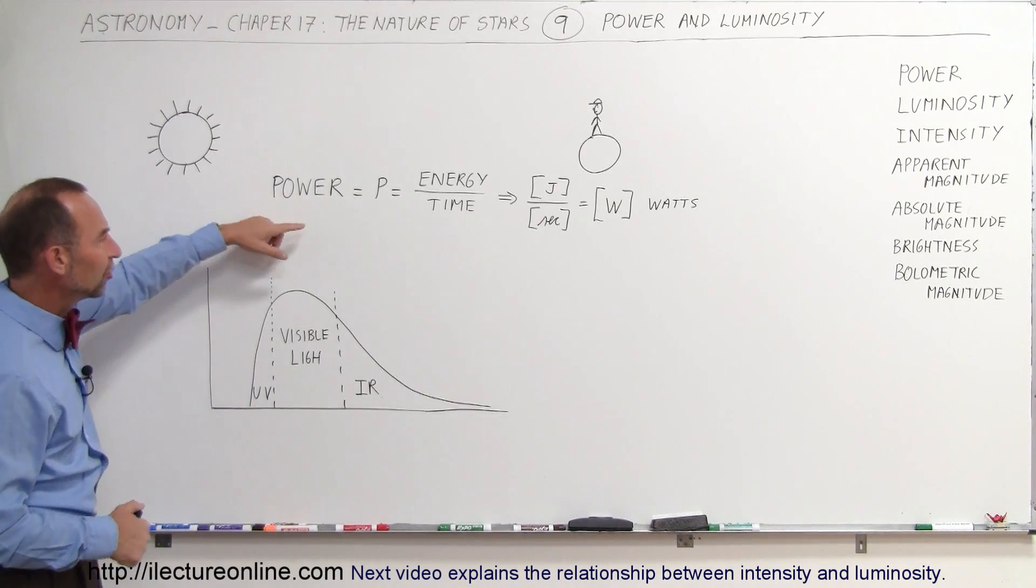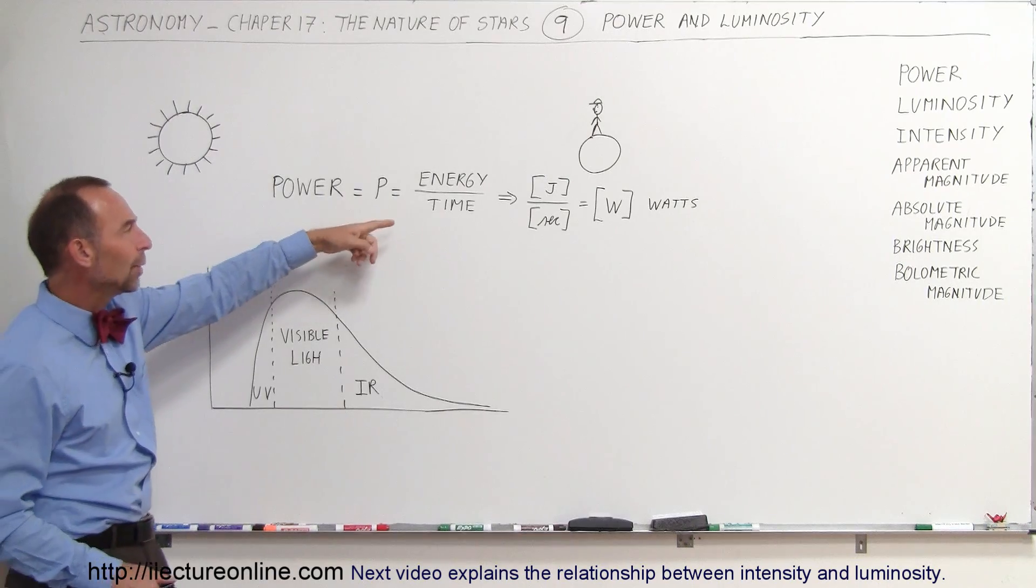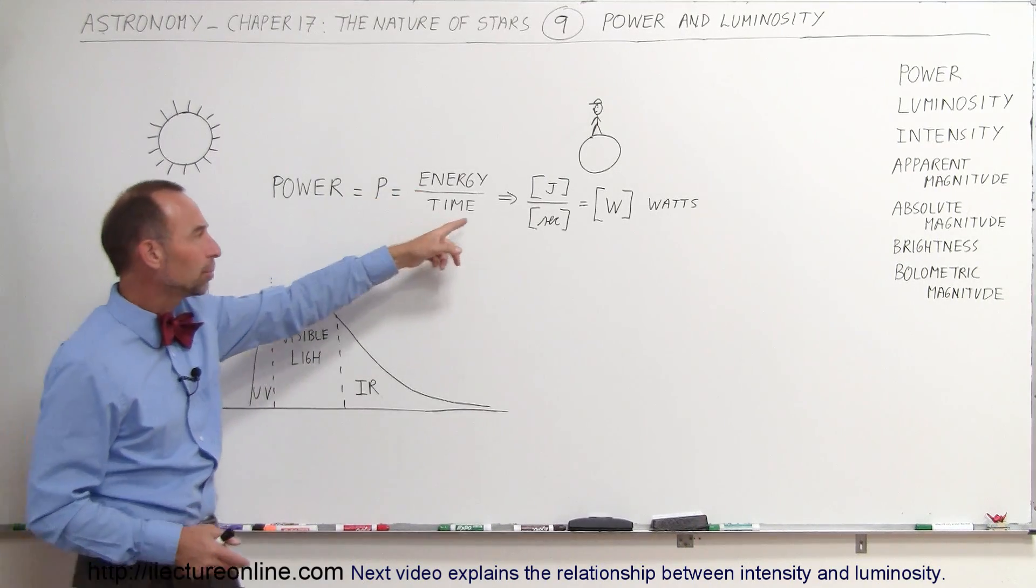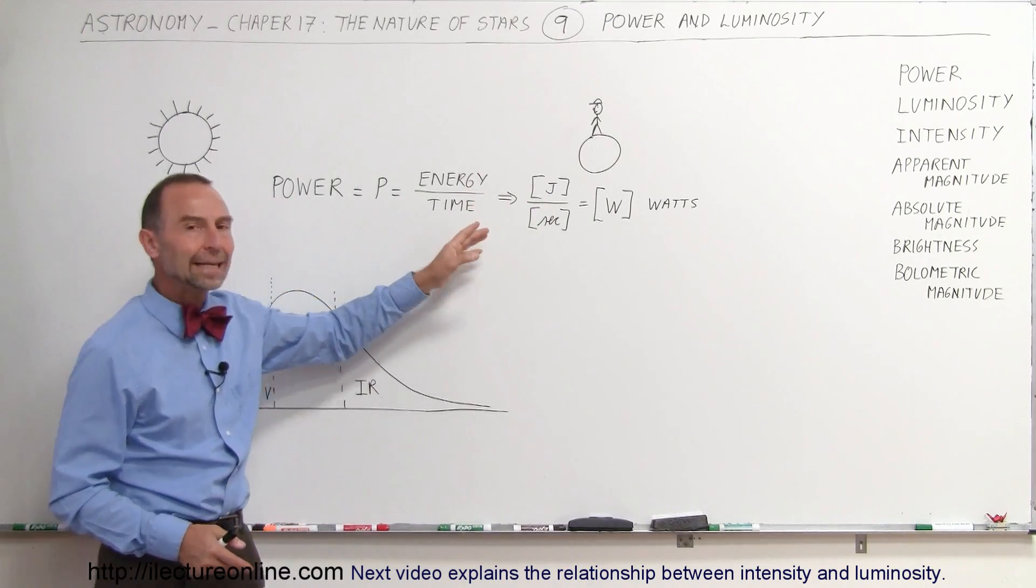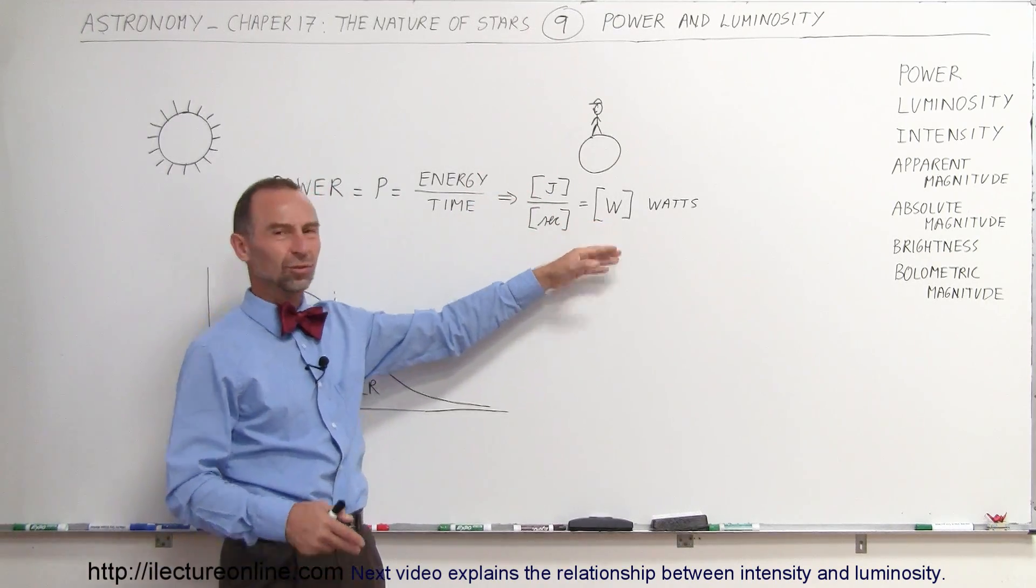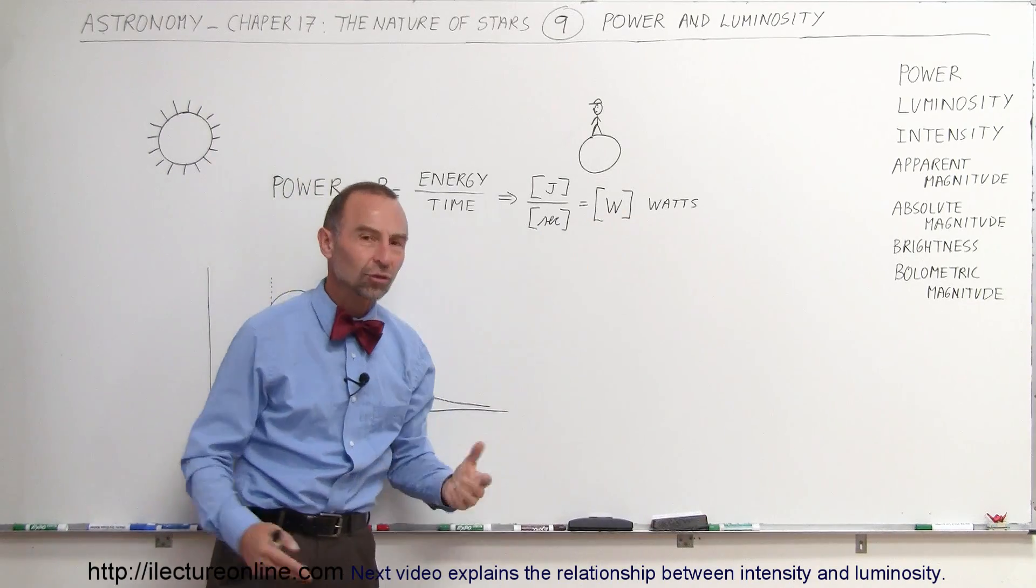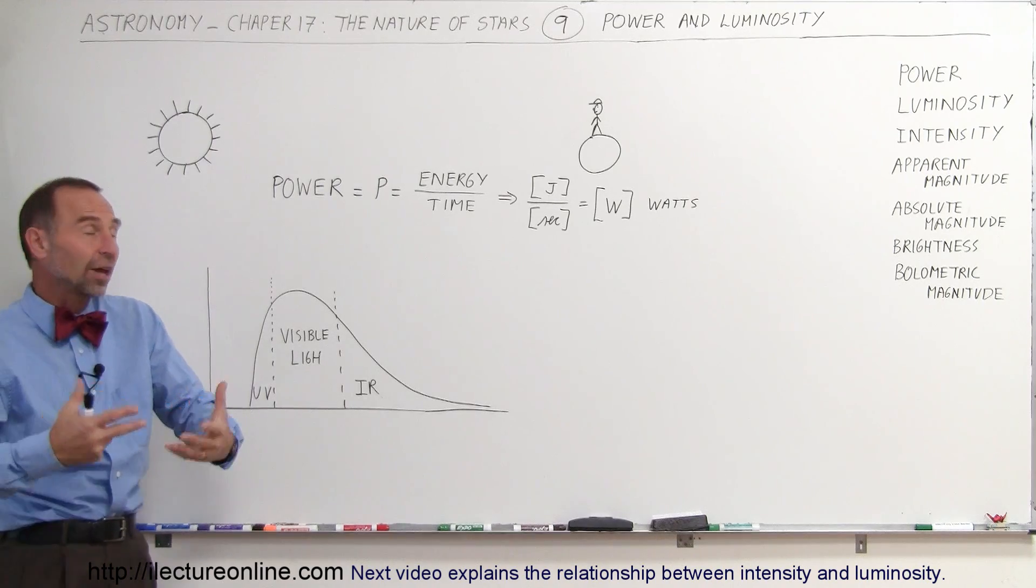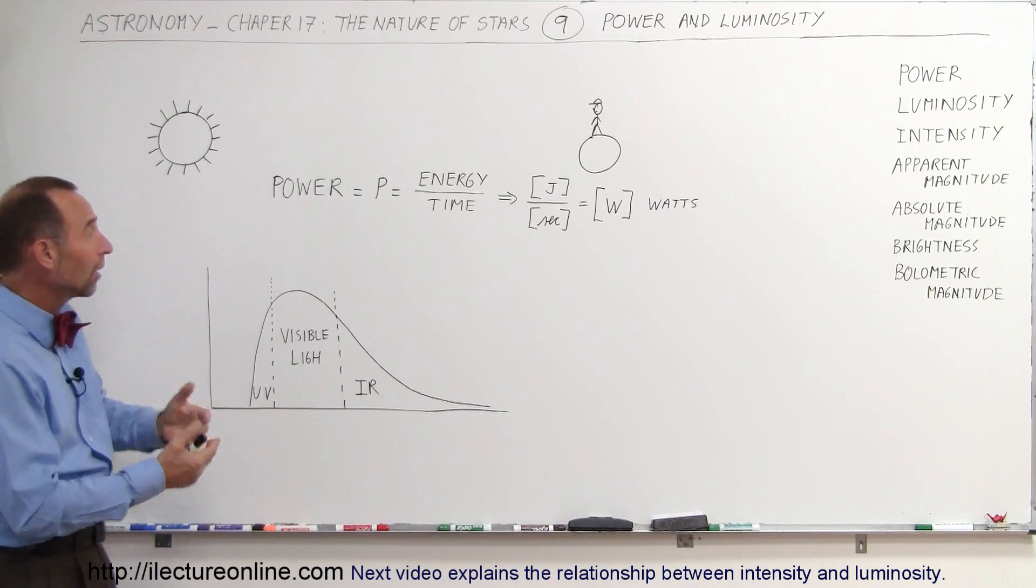So power is by definition, we use the letter P, is simply the ratio of the amount of energy output per unit time, and so the energy output is usually in joules, and the time is usually in seconds, so a joule per second is a watt, we say W for watt, or we use simply the term watts.